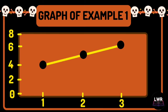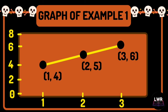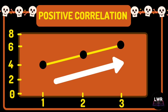Here is the graph of example number 1, where r is equal to 1. The plotted points are (1, 4), (2, 5), and (3, 6). By looking at the graph, we can see that the direction of the slope is upward, so it is a positive correlation.